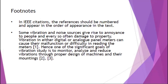Here is an example of an idea that someone has used in their paper and they're attributing that idea to the author. For example: 'Some vibration and noise sources give rise to annoyance to people and damage to property. Vibration of either digital or analog panel meters can cause their malfunction or difficulty in reading the meters.' [1]. The information used from the source is attributed using bracket notation. If you're using more than one source together to form one idea, you'll see that [2,3] attributes source numbers two and three from your works cited list to that idea in your paper.